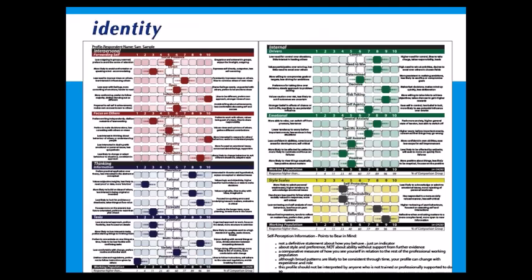Before I take you through the report itself — many of you may have already heard of Identity or be using it, and for others that might not be the case. Identity is a psychometric personality profiling tool. It's all based on self-perception and an individual will fill in the questionnaire online — normally statements around preferences and styles related to personality. On this slide you can see there are 36 key areas within the personality profile.